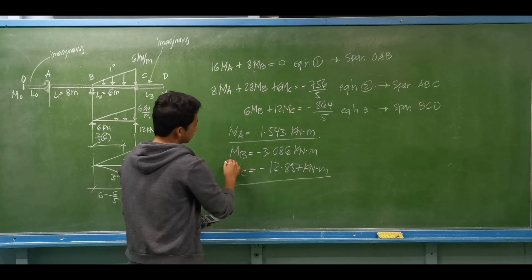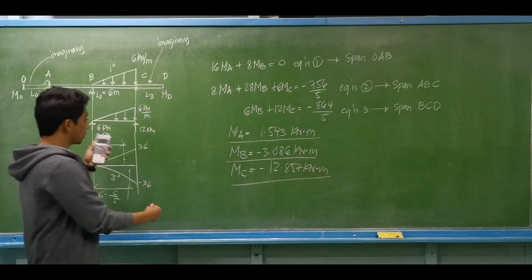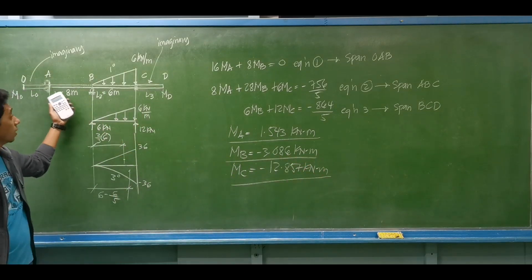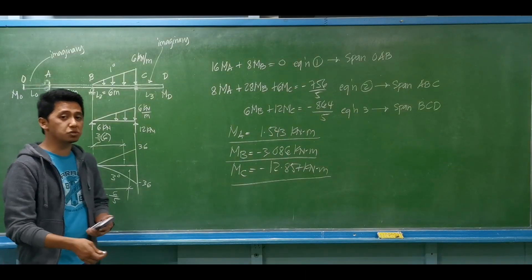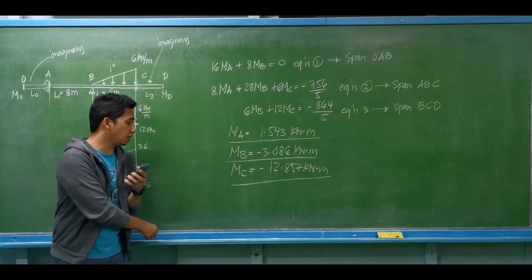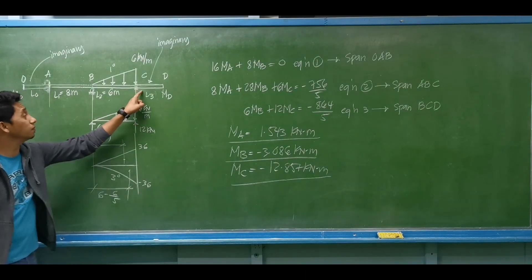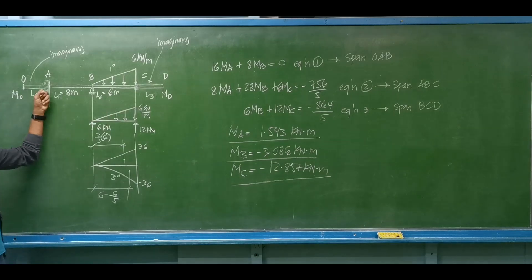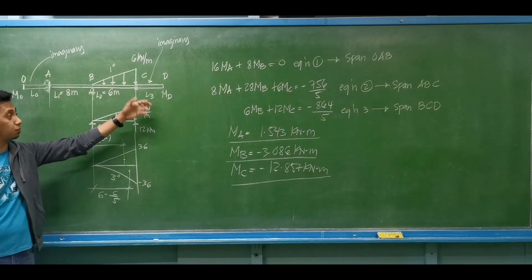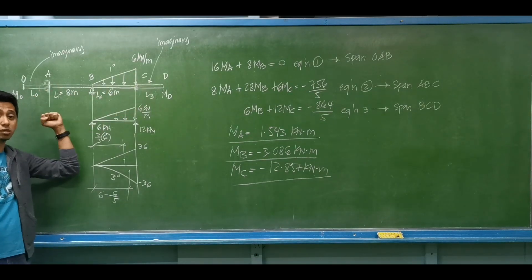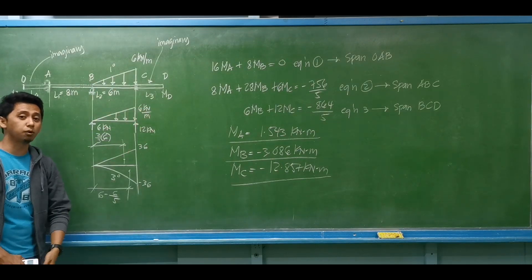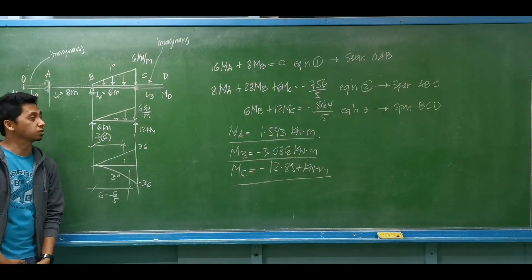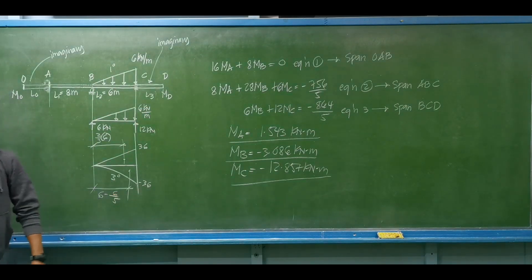These are the moments at each support: at A, B, and C. When dealing with fixed supports using the three-moment equation, all you need to do is introduce an imaginary span with an imaginary moment at each fixed end, just to establish the equations. This concludes the example.